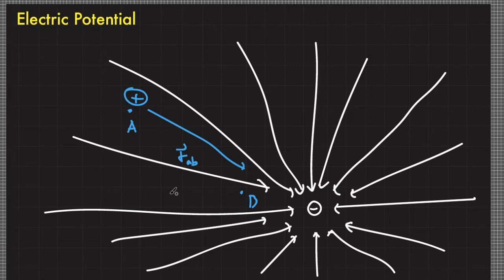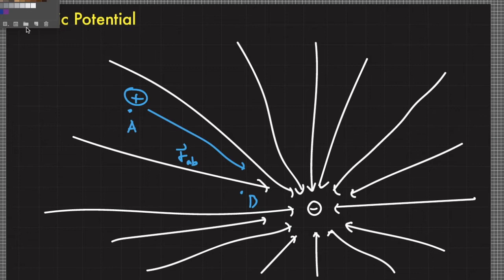One of the easiest ways to convert a vector quantity into a scalar quantity is through dot product or scalar product. Since we have a concept of displacement here, we could actually calculate the work done. Since work done is essentially a scalar product, we could compute the work done by the electric field on our positive test charge.